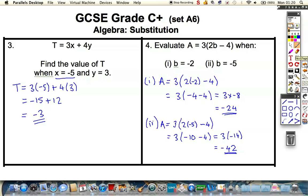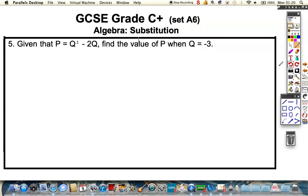One final question is set on substitution. So, we've got an expression P equals Q squared minus 2Q. I want to evaluate P when Q is minus 3. Again, we've got negatives. So, pause the video, see how you do, and then come back and watch it.